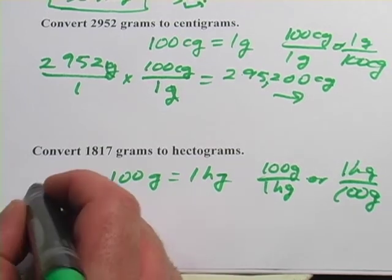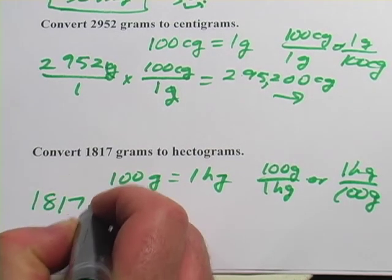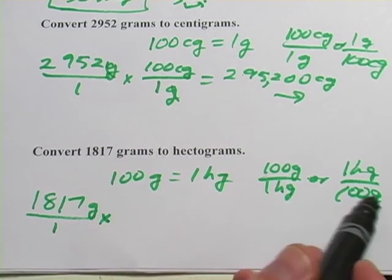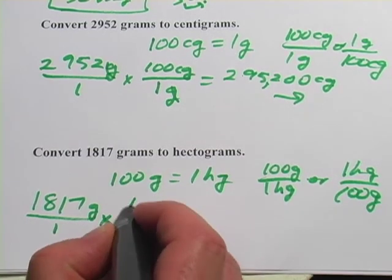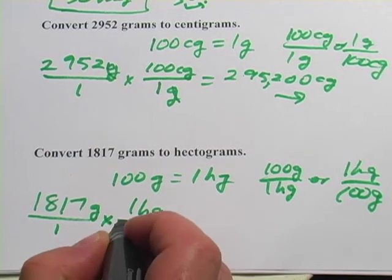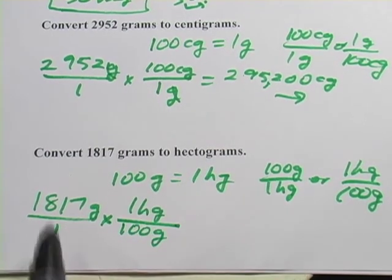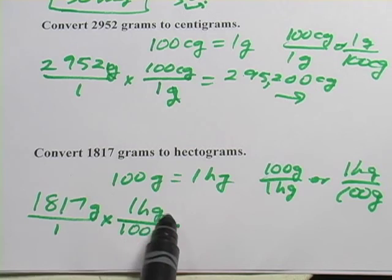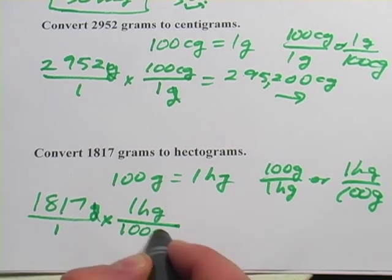Set up our problem, 1,817 grams. And we'll choose the one with grams on the bottom. So 1 hectogram over 100 grams. This case we get 1,817 times 1. Let's cancel our units here.